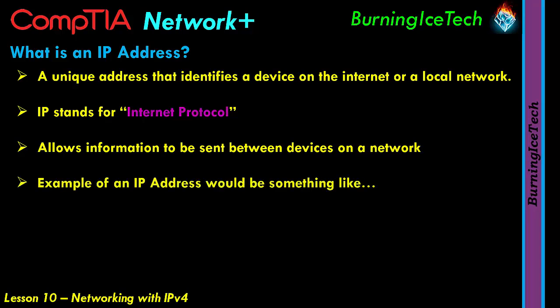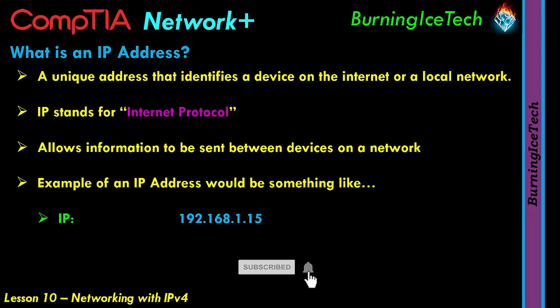An example of an IP address would be something like 192.168.1.15. It's quite common for IP addresses to start with 192.168, but it's not limited to that. That will basically determine what class of IP address you're dealing with — whether class C, B, or A — which will be covered in a later lesson.